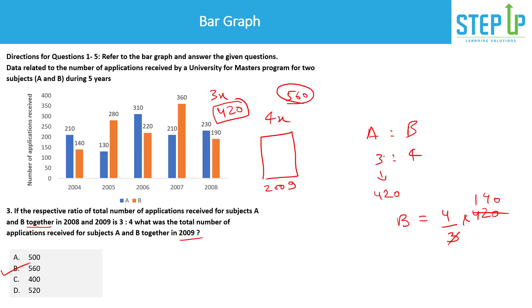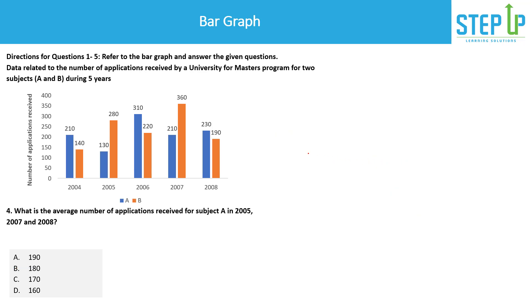For the previous question on ratios, you can refer to my ratio videos where this is already explained. Question 4: What is the average number of applications received for subject A in 2005, 2007, and 2008? The values are 130, 210, and 230 respectively. Their sum is 570, and dividing by 3 years gives an average of 190.